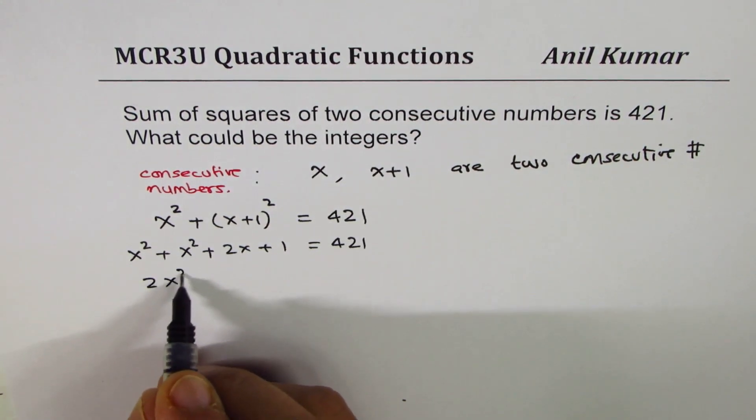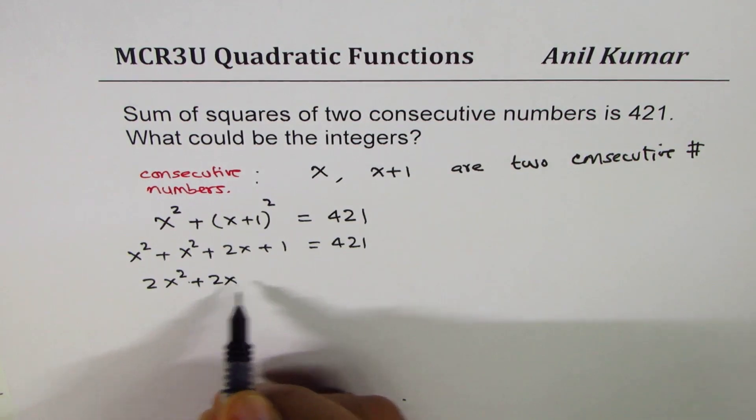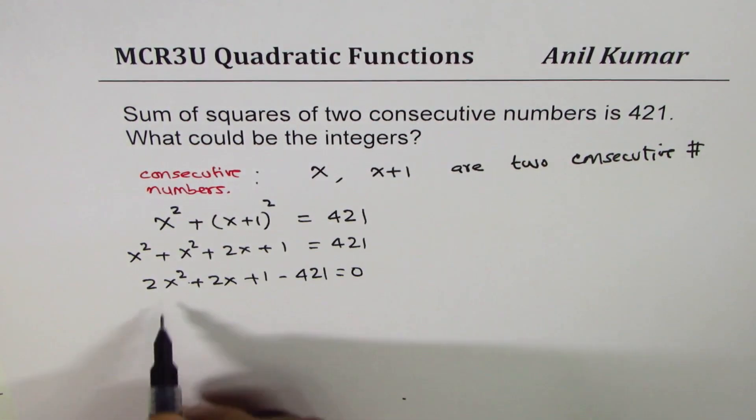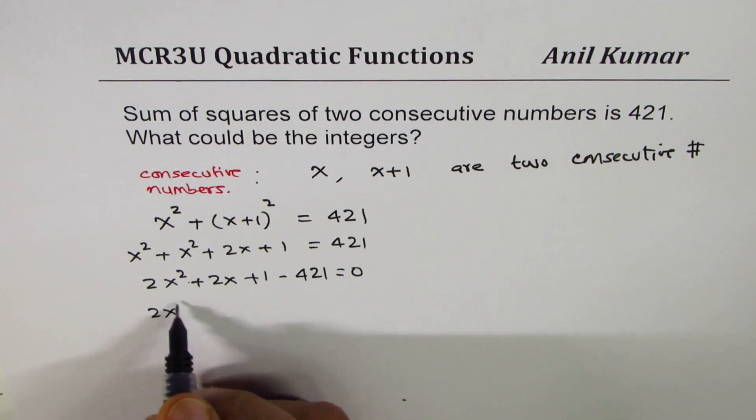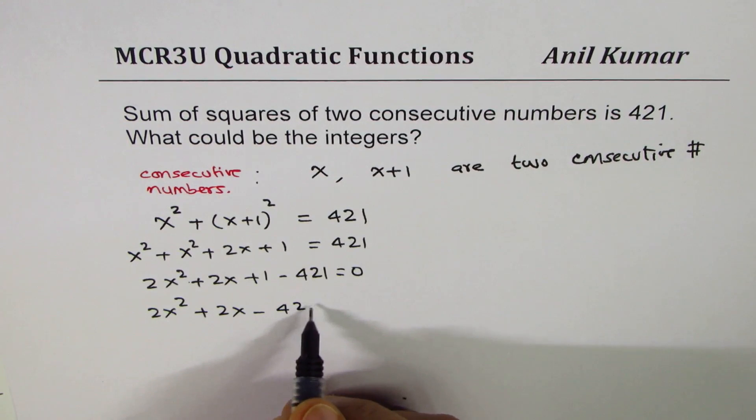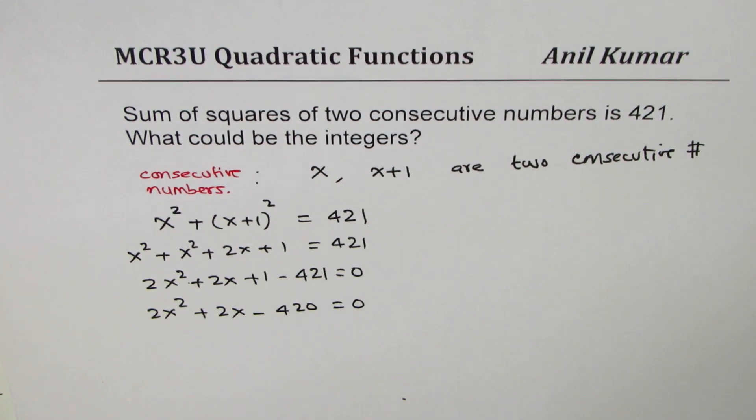We get 2x² plus 2x plus 1 minus 421 equals to 0, and that gives you 2x² plus 2x minus 420 equals to 0. You can factor 2 out - it helps since the numbers reduce a bit. You get x² plus x minus 210 equals to 0.